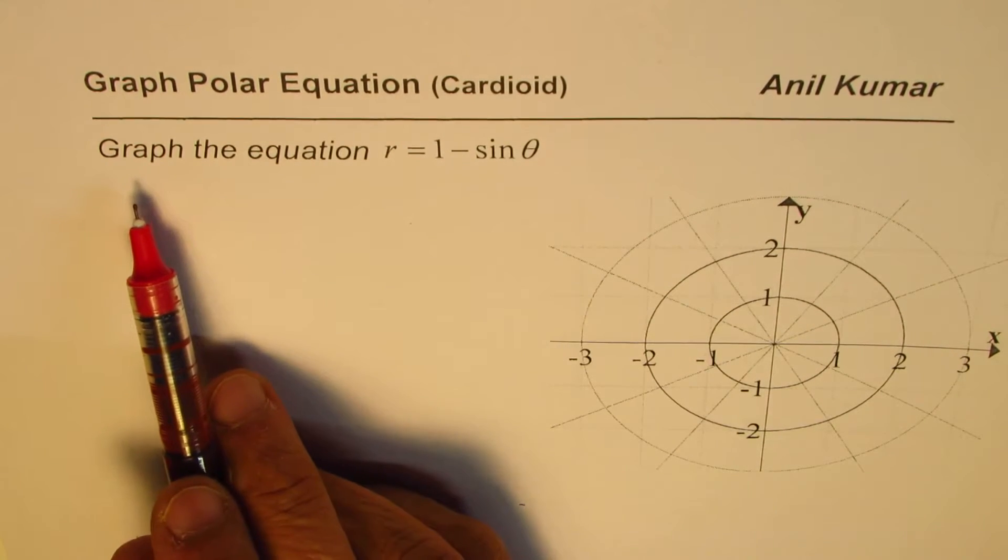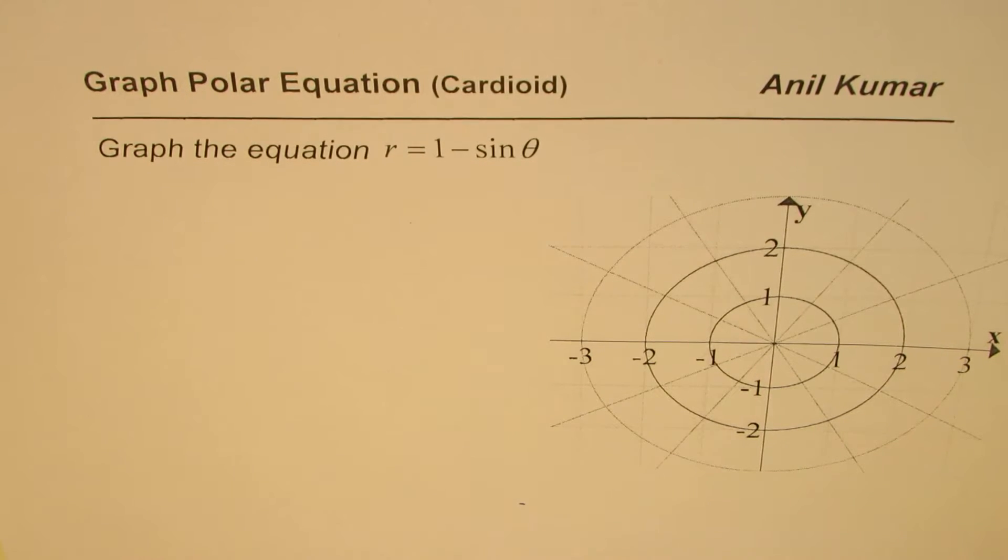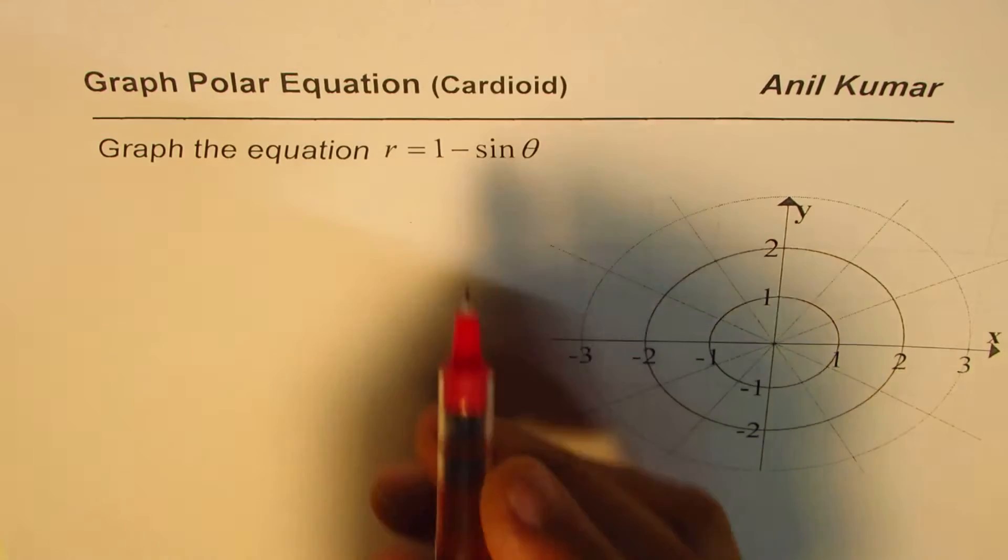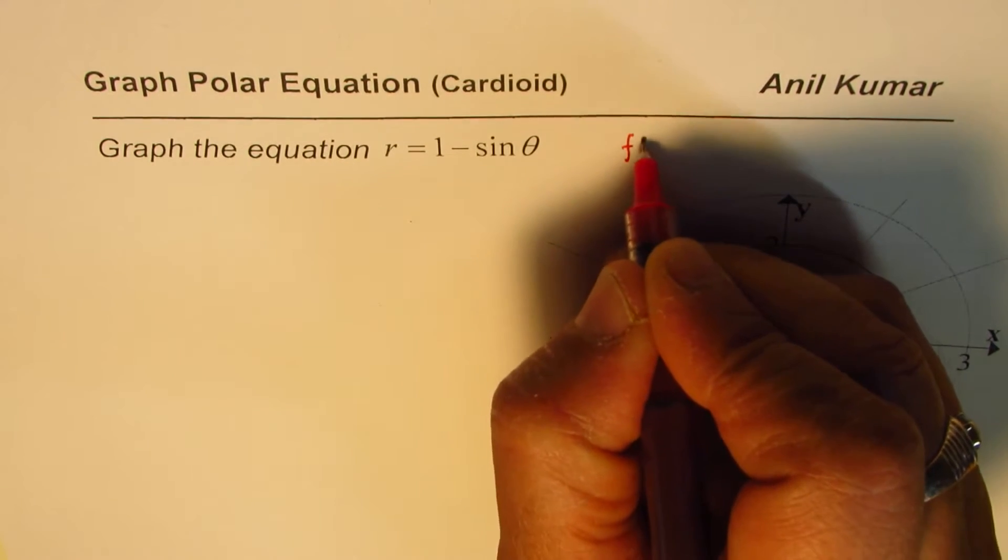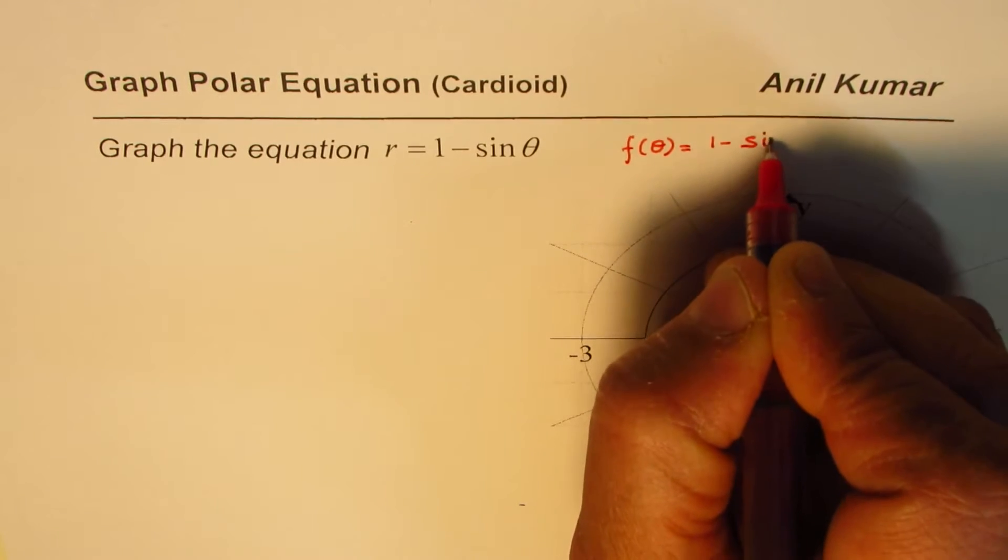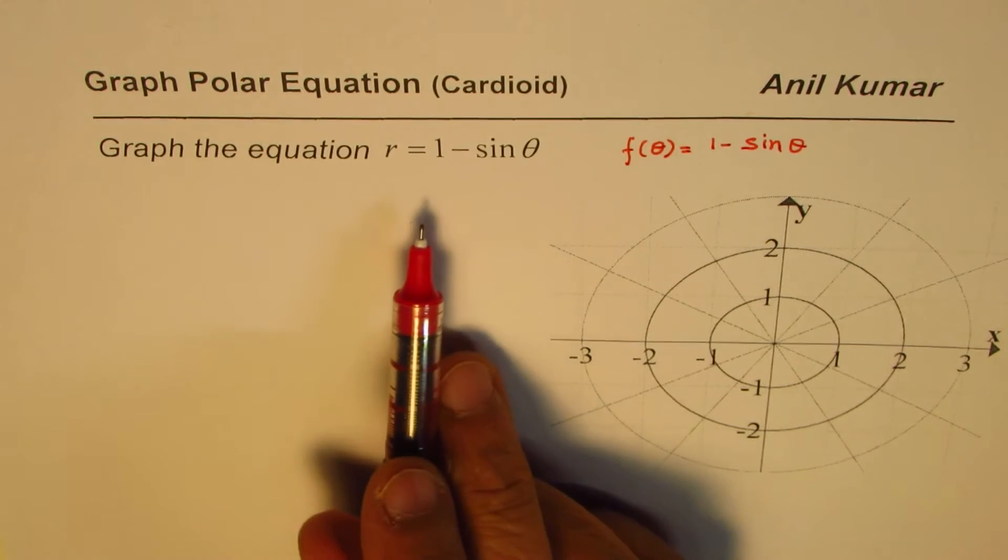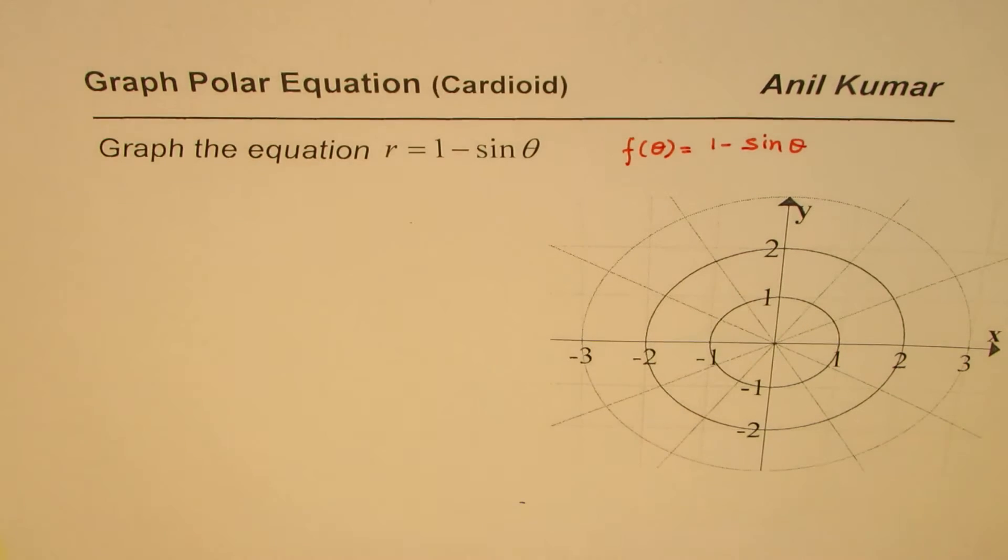The question here is to graph the equation r equals 1 minus sine theta. Now r is a function of theta, so we normally also refer to this as f(θ) equals 1 minus sine theta.